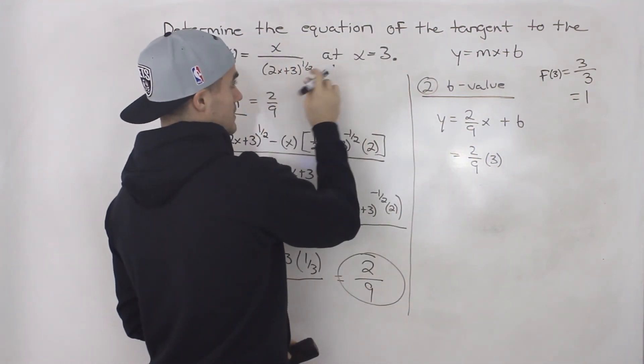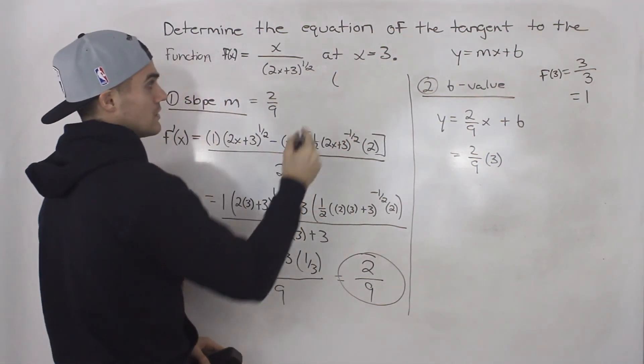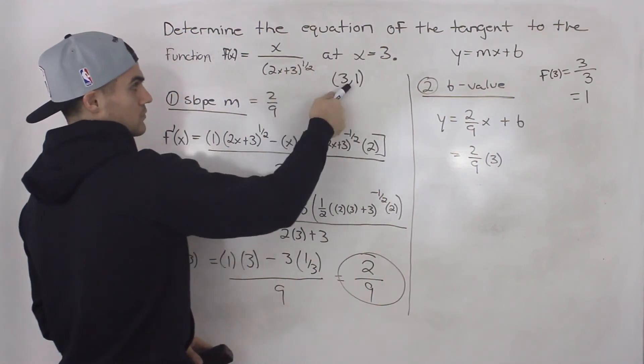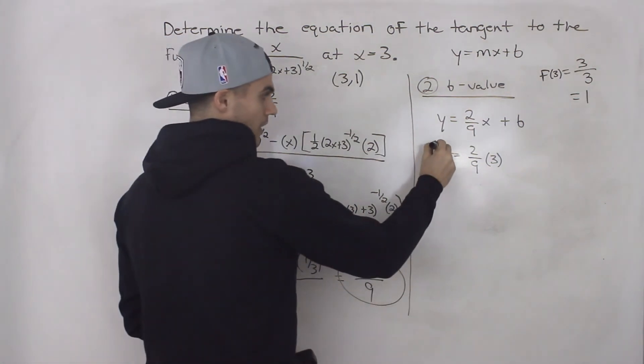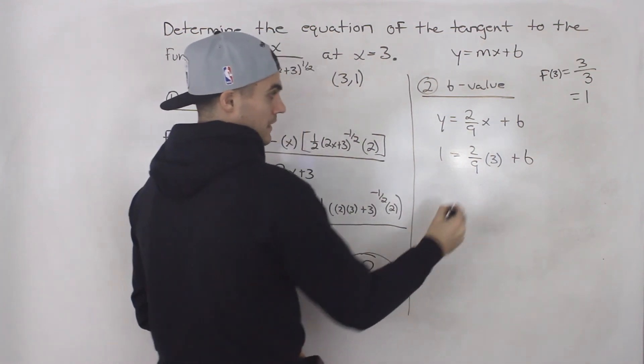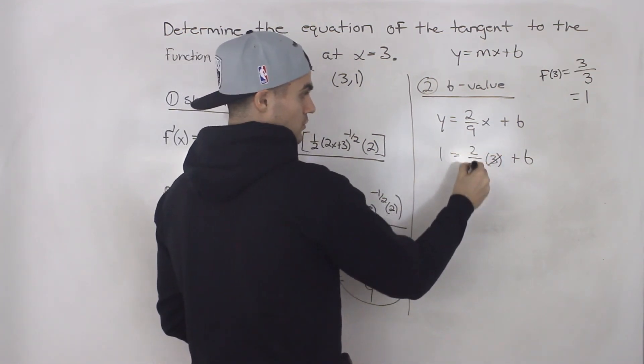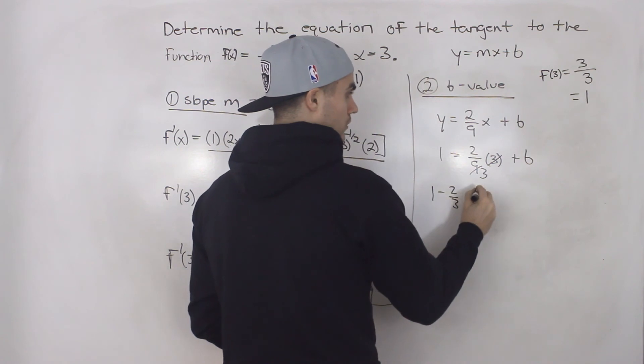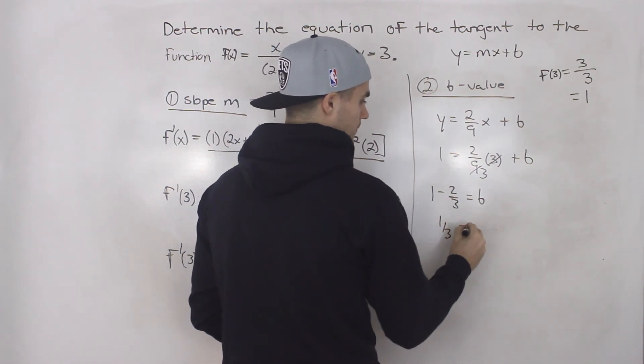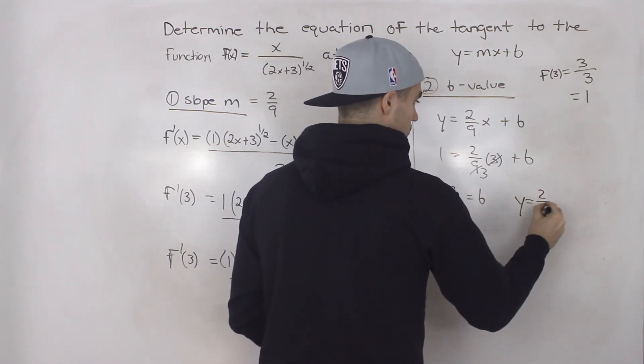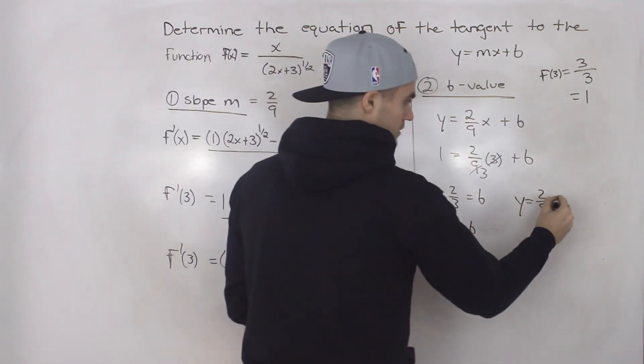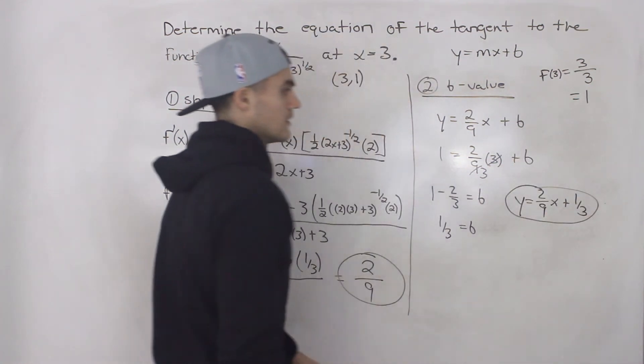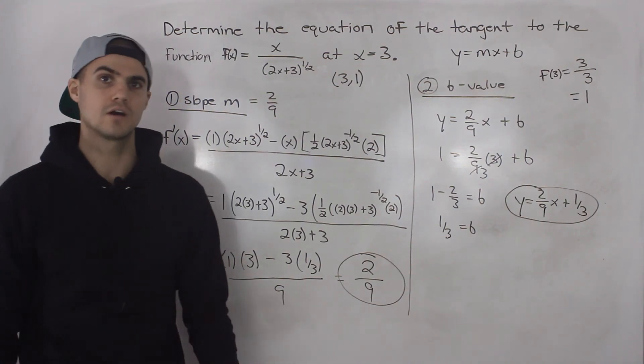So we know the coordinate on this function where we're finding the tangent equation on is 3 and 1. So when we plugged in an x value of 3 in this function, we got a y value of 1. And that y value is going to go here. So we've got plus b. And then notice 2 over 9 times 3, that simplifies into 2 over 3. 1 minus 2 over 3, when we bring it over, will give us the b value, which would be 1 over 3. So our final answer is the slope, 2 over 9, which we found here, 2 over 9x plus 1 over 3, which is the b value that we found in this step. So that there is your final answer. That's the equation of the tangent.